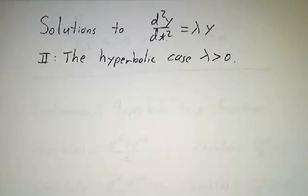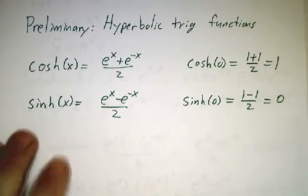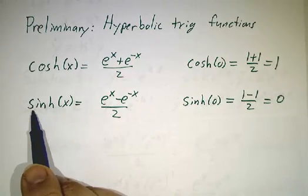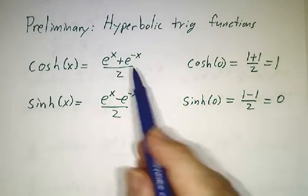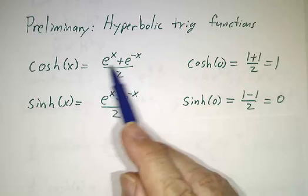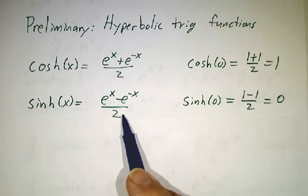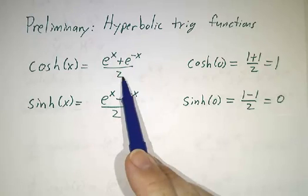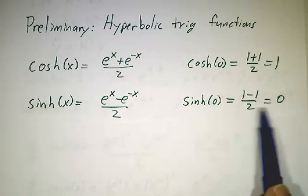Before we get into that, I need to define the hyperbolic trig functions. They are called the hyperbolic cosine — cosh — and the hyperbolic sine — sinh. These are just combinations of e^x and e^(-x). Cosh is the average of e^x and e^(-x), and sinh is half the difference. So cosh(0) = (1+1)/2 = 1, and sinh(0) = (1-1)/2 = 0.